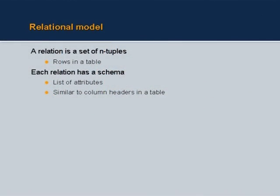A relational model merely formalizes something we briefly discussed earlier — those sets of students, sets of courses, and association sets. Imagine that each set is a mathematical entity. Based on the fact that each set can be recorded as a mathematical entity comprising elements and that mathematical operations can be defined on these sets, came out the relational algebra that Professor Codd proposed. He defined a relation to be a set of n-tuples.